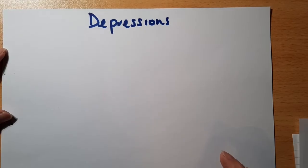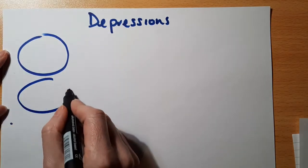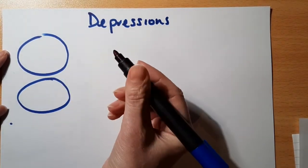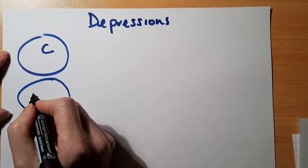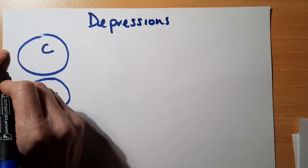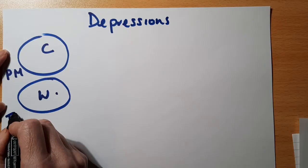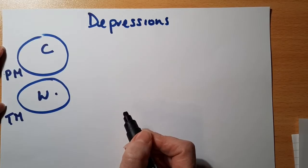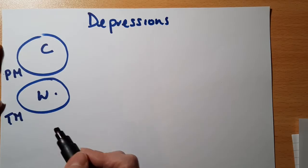Depressions form when two air masses meet. An air mass is a body of air with similar characteristics in terms of temperature and humidity. They occur when we have a cold air mass and a warm air mass. The cold one is called the polar maritime air mass and the warm one is the tropical maritime air mass — maritime because they develop over the sea, tropical because it comes from warm tropical regions, and polar because it comes from the poles.